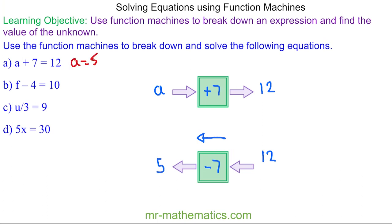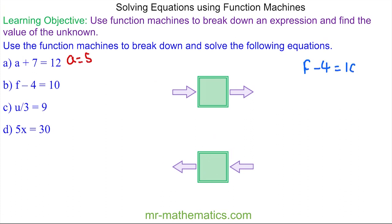12 take away 7 is 5, so a = 5. We can check this works by putting 5 back into our top function machine: we have 5, we add 7 to it, and we do get 12 — so we know it works.